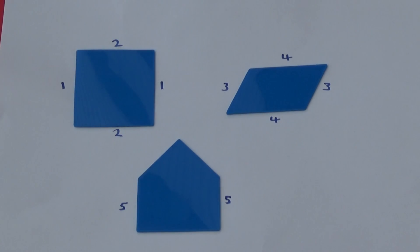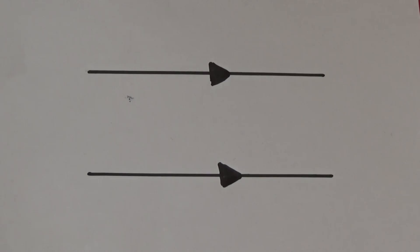We can see parallel lines on these three shapes. When you see arrows on lines like this, it tells us that they are parallel.